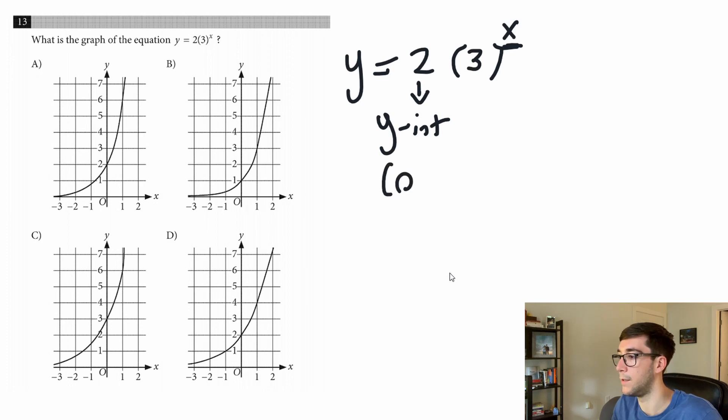Looking at our graphs, this one has (0,2), this one's good. This one does not have (0,2), can't be B. This one does not have (0,2), can't be C. And this one does have (0,2), so it can be that one. So we're down to A and D.